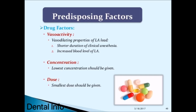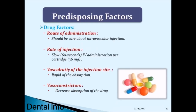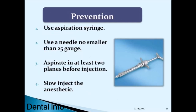Drug factors: vasodilating properties of local anesthetics lead to shorter duration of clinical anesthesia and increased blood level of local anesthetics. Use the lowest concentration and smallest dose possible. Be careful about intravascular injection with the route of administration. Rate of injection should be slow—60 seconds per cartridge, 36 mg. Vasoconstrictors decrease absorption of the drug.